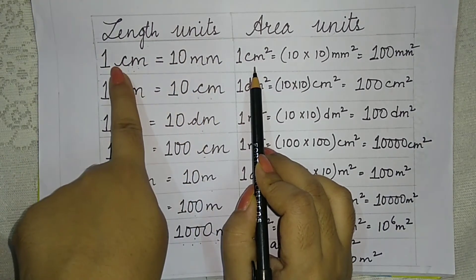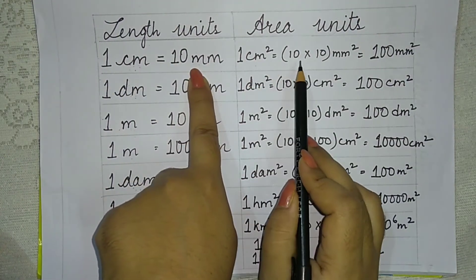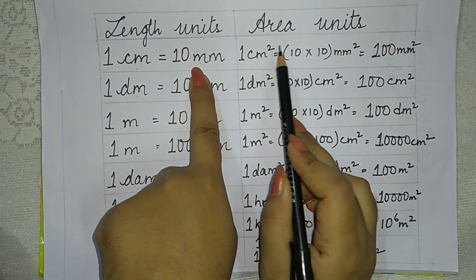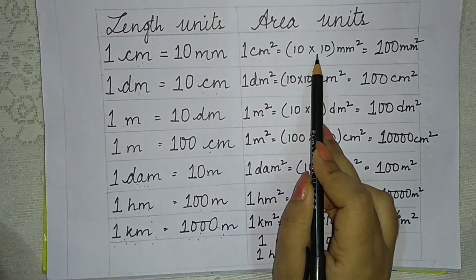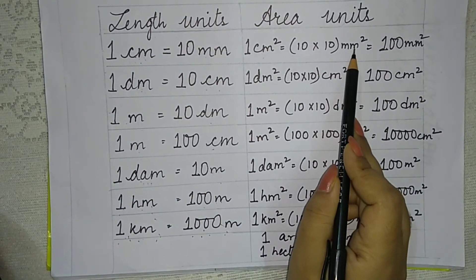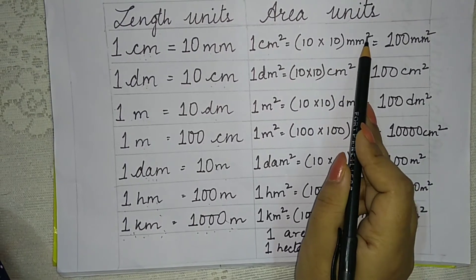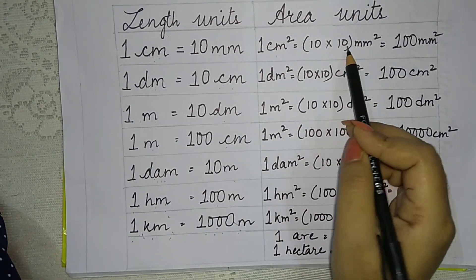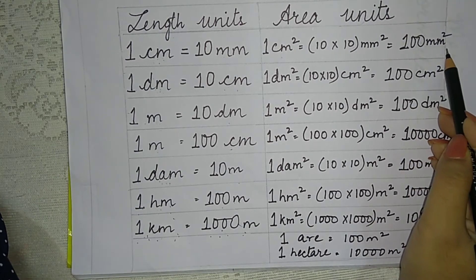When the unit is squared, it means it is doubled — multiplied by itself. So since 1 centimeter is 10 millimeters, 1 centimeter square equals 10 into 10 millimeter square. Millimeter into millimeter equals millimeter square. So 10 into 10 equals 100, giving us 100 millimeter square.